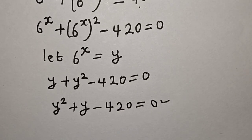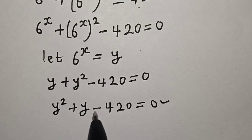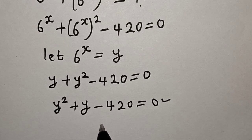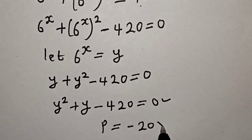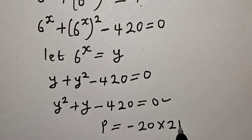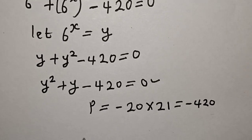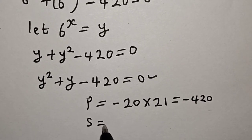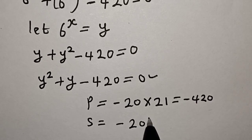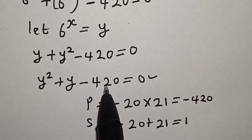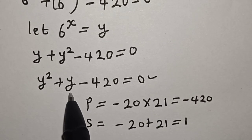This is a quadratic equation which can be solved using factorization method or the quadratic formula. In this case, we are going to use the factorization method. Our product is minus 20 multiplied by 21, which equals minus 420, and our sum is minus 20 plus 21, which equals 1.